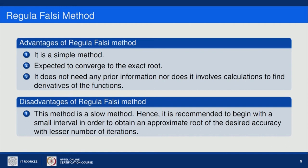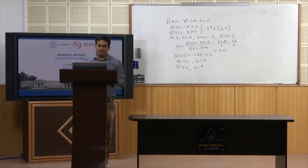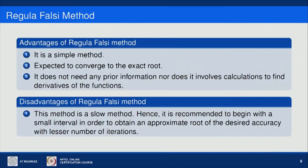Like bisection, Regula Falsi has advantages and disadvantages. The advantage is that it is a simple method expected to converge to the exact root without requiring any prior information or calculation of derivatives. The disadvantage is that it is a slow method, so it is recommended to begin with a small interval to obtain an approximate root of desired accuracy with fewer iterations.